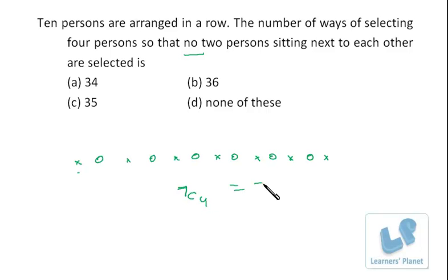So 7C4 is what? 7C3 and that's 7 into 6 into 5 by 3 factorial. That is 6. So in all there are 35 ways of doing this. I hope you are clear.